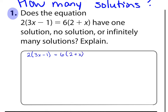The first step in solving an equation is to do any simplifying that we can do. In this problem, we could simplify using the distributive property. So I'm going to distribute this 2 on the left of the parenthesis: 2 times 3X is 6X, and 2 times negative 1 is negative 2. On the other side, 6 times 2 is 12, and 6 times positive 6X is positive 6X. Notice at this point that we have 6X on both sides of the equation — it's the same term on both sides.